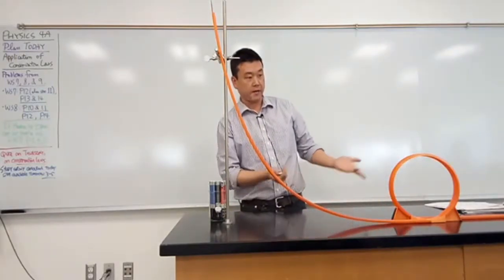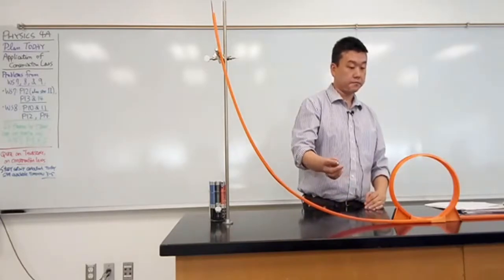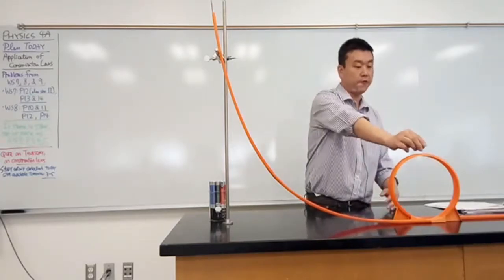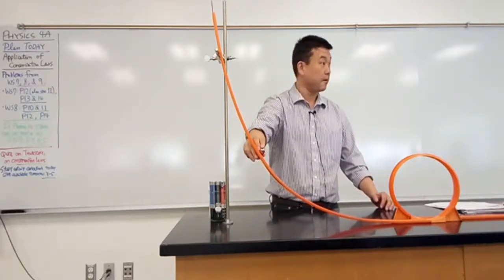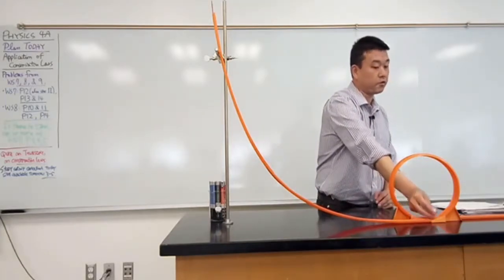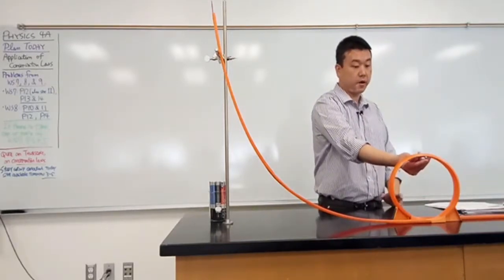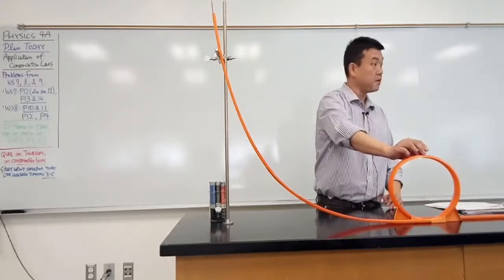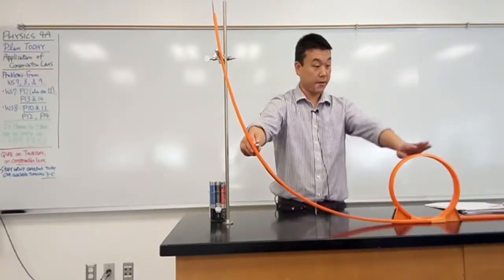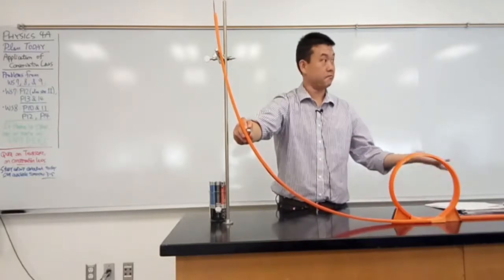The question we ended the class with last time was: what's the minimum speed this has to be moving at, or another way of phrasing the question is, what is the minimum height it needs to start from so that it'll have enough energy to have enough speed here so that it has enough energy to end up here. The intuitive guess I illustrated was: we want this to come to at least this height. So let's say we are going to start it at about the same height as where we want it to end up, and move it up a little bit to account for friction.